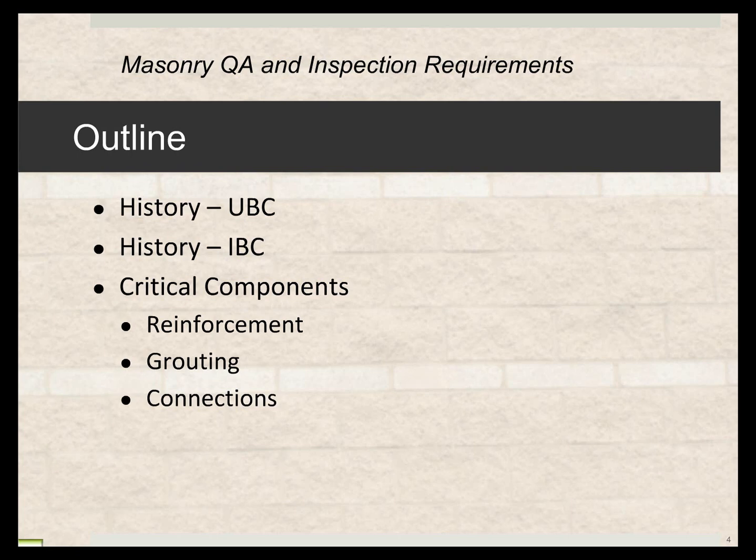We're also going to take a special look at connections, because that is where systems can fail. When connections fail, it makes the whole building look bad. The masonry might not fail — it might be the roof connection that slips off the masonry, and then the whole building is devastated if the roof collapses. The masonry wall may still be standing, but without the entire building system, a lot of repair has to be made. Then we're going to look at what I call the right specification — some examples of specifications, how they're interpreted in the field, and how they can be vastly improved and simplified.